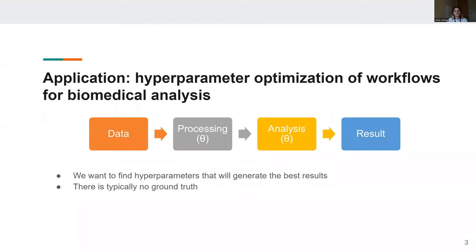This is a scenario that frequently arises in the context of hyperparameter optimization of workflows for biomedical data analysis. Let's say we have a workflow where we have some input data and we want to analyze it via a sequence of parameterized steps to compute some desired result. And we want to find hyperparameter settings that will generate the best results as measured by some quantity of interest.